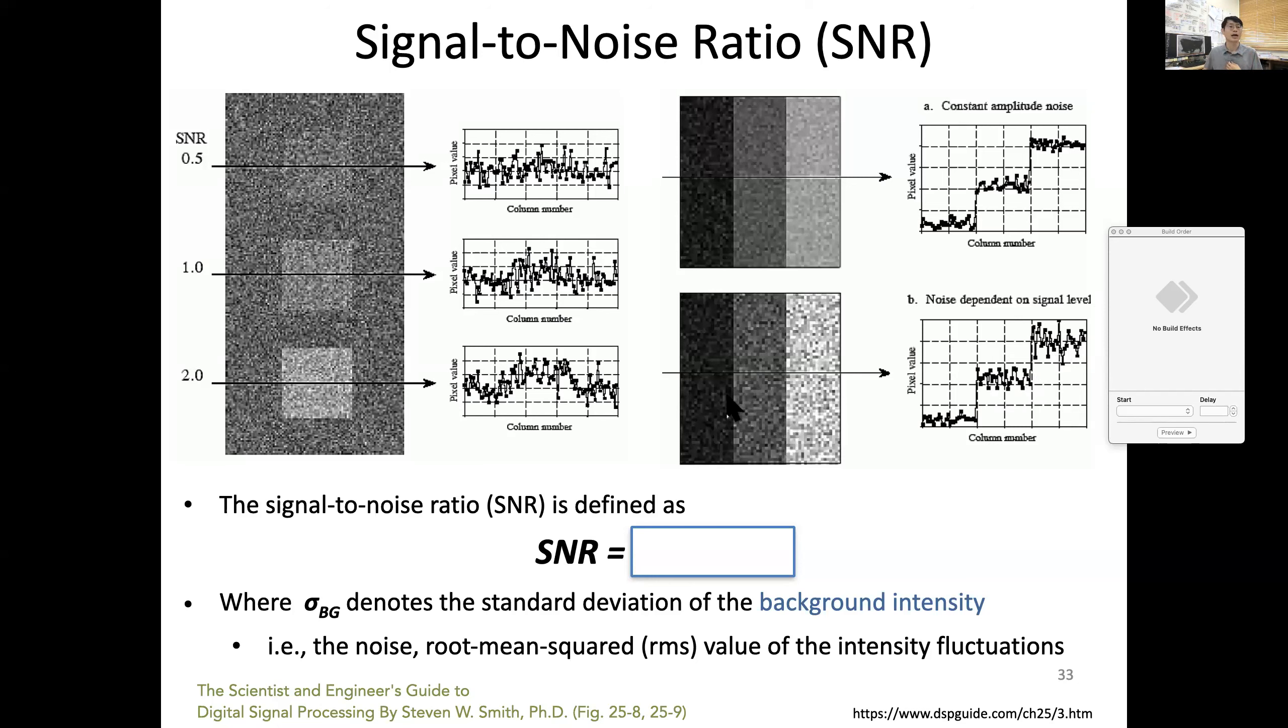Hopefully you understand how we define signal-to-noise ratio. You can define signal level with respect to the background noise. Average signal in your region of interest divided by the standard deviation of the background, which is actually root-mean-square value of the intensity fluctuation of the background.